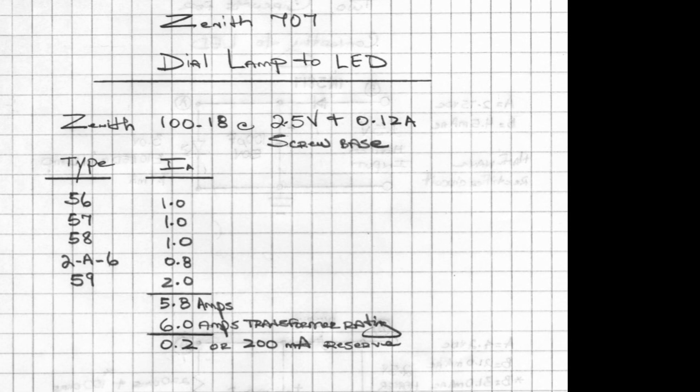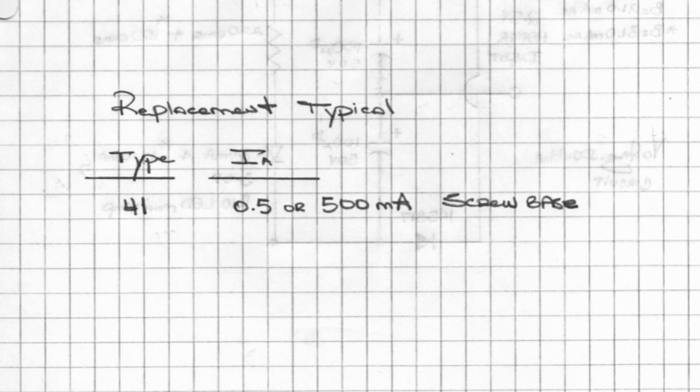Typically, people would just use a Type 41 bulb, which is rated at about 500 milliamps. That puts me over just a little bit from the transformer—probably not a big deal because that was the typical replacement lamp for the 2.5-volt string back in the day.